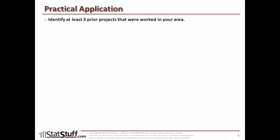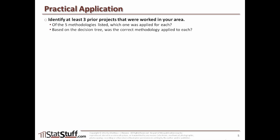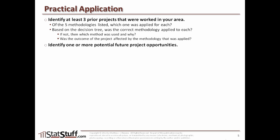Before we close this lesson, let's discuss how we can apply some of these concepts in a practical way. Identify at least three prior projects or initiatives you've worked on and ask yourself: which of the five methodologies was applied for each project? Based on the decision tree, was the correct methodology applied? If not, which method was used and why? And was the outcome affected by the methodology applied? Also identify one or more future potential project opportunities and try to use that drill down to determine which of the five methodologies should be applied and why.